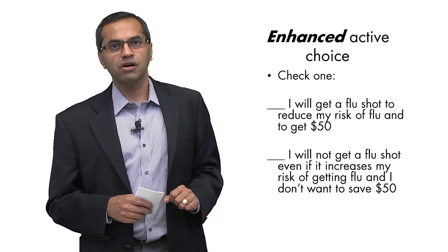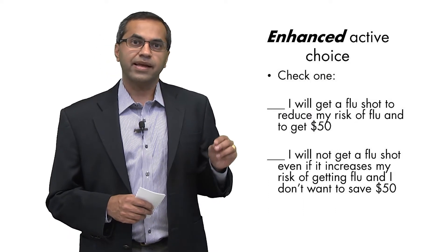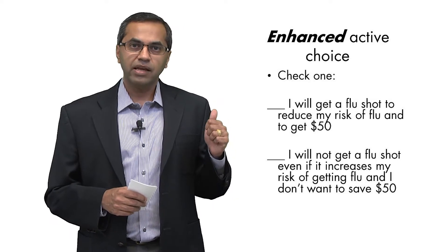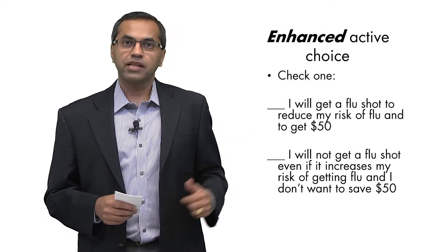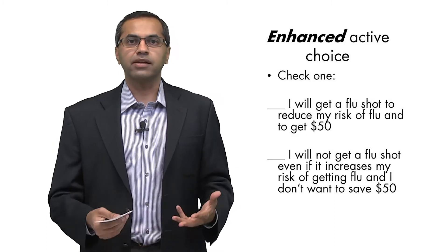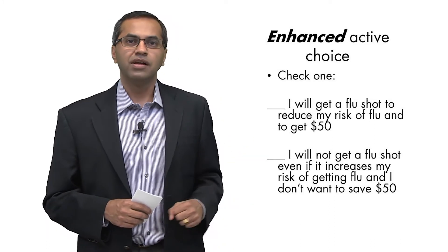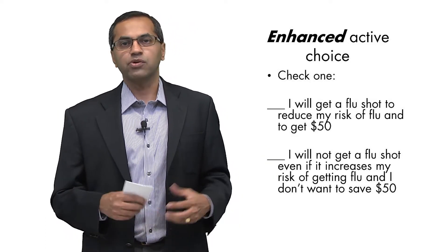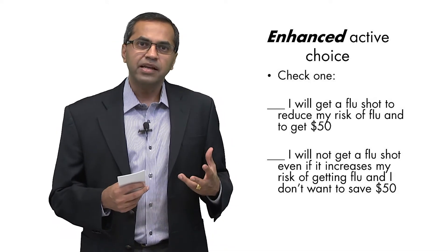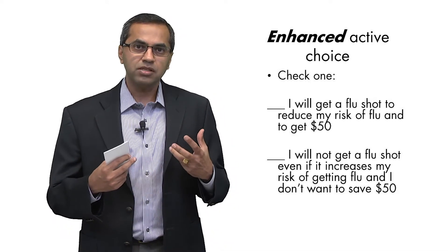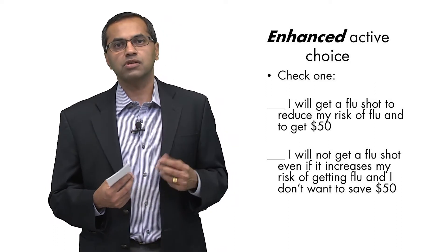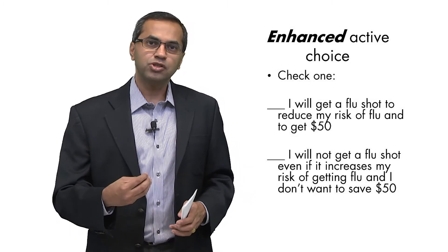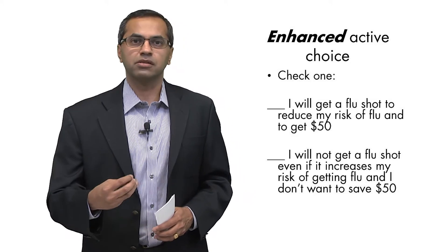But here's the most interesting version of the questionnaire. This is what is called an enhanced active choice. It said, check one of the following: yes, I will get a flu shot to reduce my risk of getting the flu and because I like the $50 incentive. Or no, I won't get a flu shot this fall because I don't care about my risk of getting the flu and I don't care for $50. So what's happened here is the way in which you frame the question makes the cost of not getting a flu shot salient. If you actually see this question framed, you would have to convince yourself that you're completely irrational to not get the flu shot.